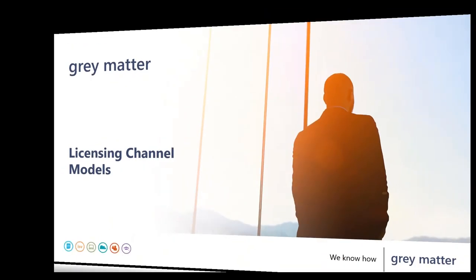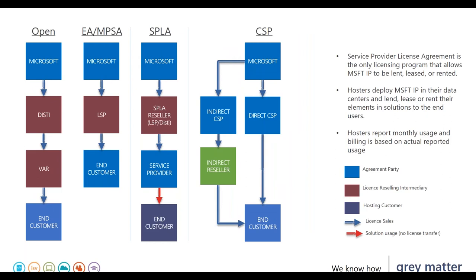First, the licensing channel models. This is how SPLA sits across other agreements. In all cases, Microsoft sits on top as the IP holder. In SPLA, Microsoft then sells through the SPLA reseller, which in this case is Grey Matter. We then enroll the service provider, and each service provider would sell a software service — not the licenses — to its end customers. In other channel models, you typically go through an LSP or VAR as an end user.